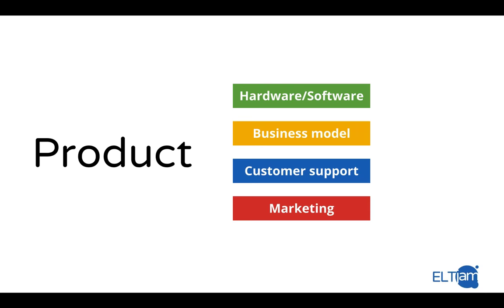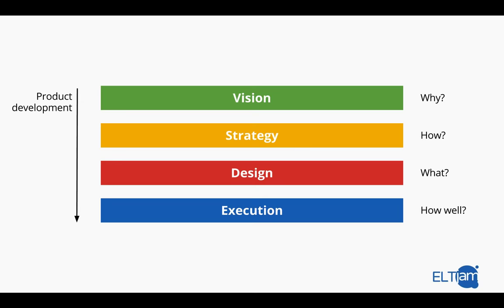Product development has basically four main stages. It starts with a product vision, which outlines how the world or people's lives will be better if your product exists. Once you've got a product vision, you dive into a product strategy — basically, how are you going to achieve your vision? Once you've got vision and strategy pinned down, it's about design: deciding what you're going to build, how it's going to function, what it's going to look like. Then you move into execution — building it, how well, how quickly, and with what quality.